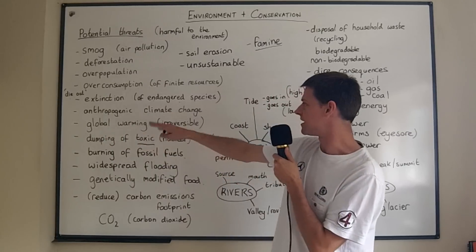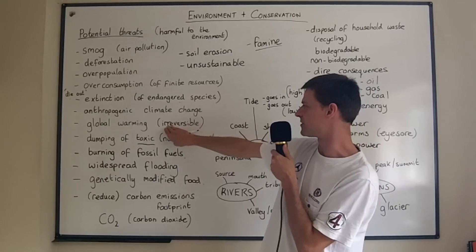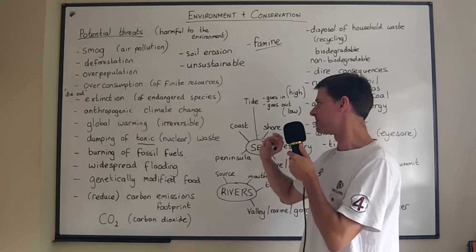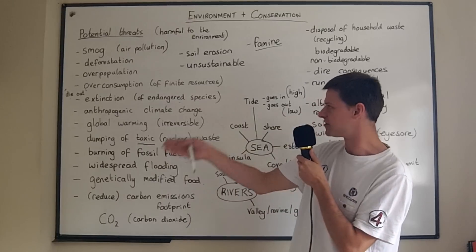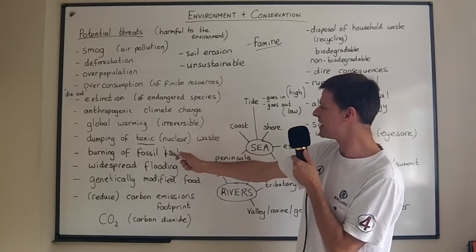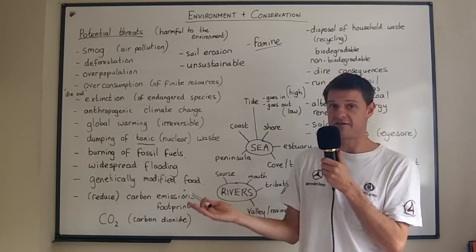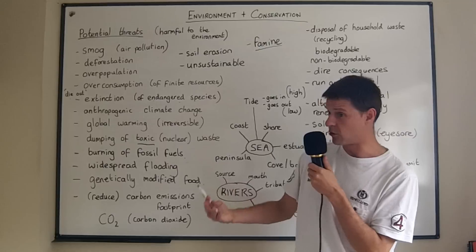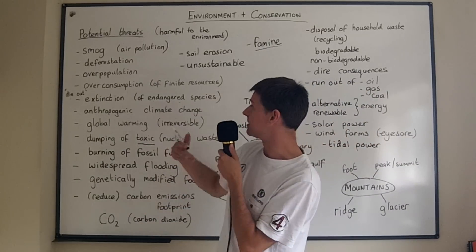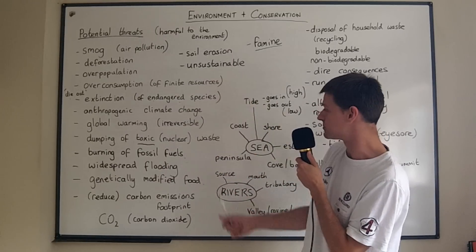Global warming is another word for climate change, and this is supposed to be an irreversible process — meaning it cannot be reversed or turned around. Once the planet starts warming, it's going to continue getting hotter and hotter. Another concern is the dumping of toxic or nuclear waste in various places, maybe at the bottom of the ocean. This leads to the ocean becoming toxic and poisoned with nuclear waste.